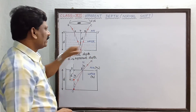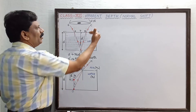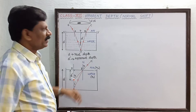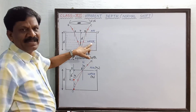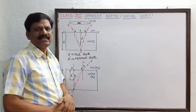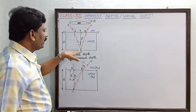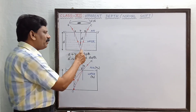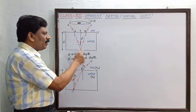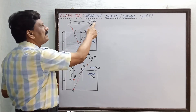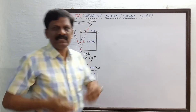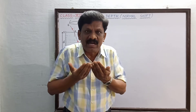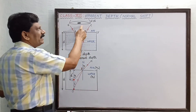Consider a tank containing water. Above the surface XY, the medium is air. Water is the comparatively denser medium and air is the rarer medium. A point object O is placed at the bottom of the tank. An observer is viewing from the top, so the eye is receiving light coming out from the object.